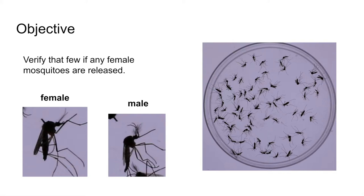Our work describes a quality assurance process which validates an SIT factory's output, to ensure that few, if any, female mosquitoes are released. The plan is to have technicians image mosquitoes produced by the factory and use measurements from a learned machine vision model to efficiently infer a contamination rate.